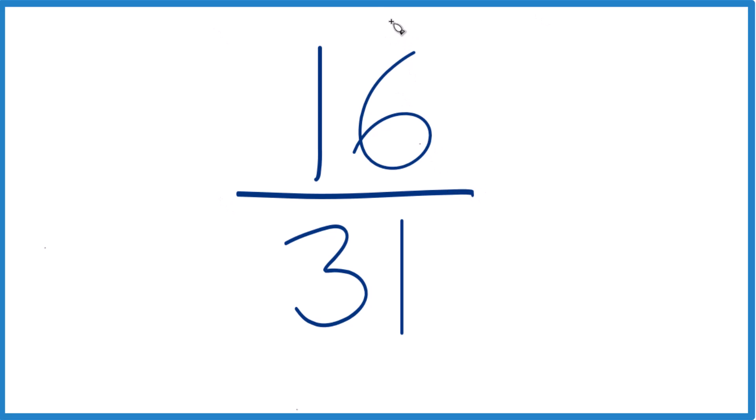To do that, we need to find the factors of 16 and then 31, and then find a common factor. We're looking for the greatest common factor.